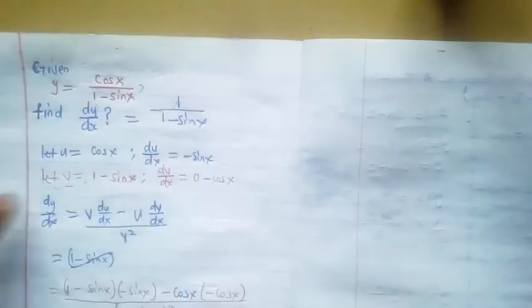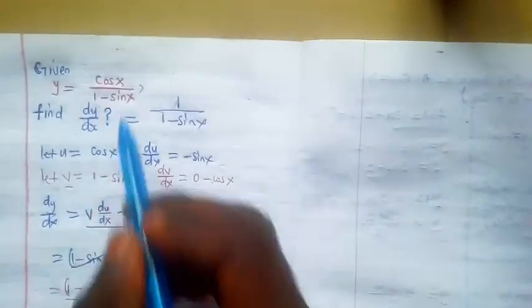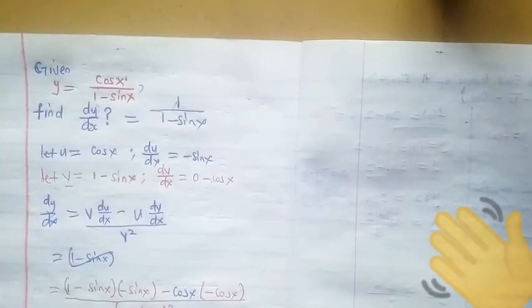So this is the derivative. The derivative is equal to 1 divided by 1 minus sine x. This seems to be a very interesting derivative because the derivative of cosec x over 1 minus sine x gives us 1 divided by 1 minus sine x. Thanks for watching. Please subscribe to this channel.